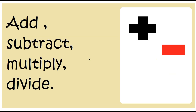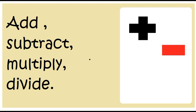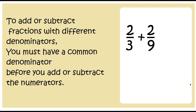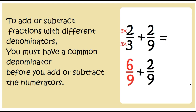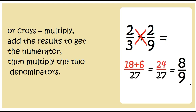Add, subtract, multiply, divide. Add, subtract, multiply, divide. To add or subtract fractions with different denominators, you must have a common denominator before you add or subtract the numerators, or cross multiply. Add the results to get the numerator, then multiply the two denominators.